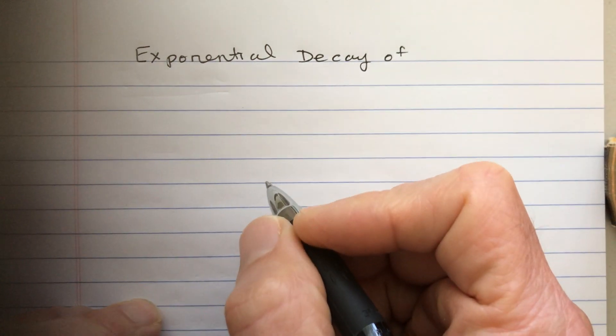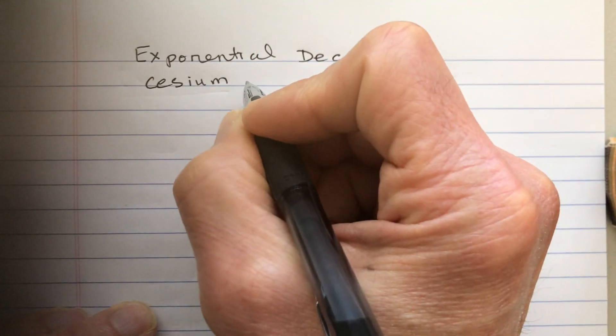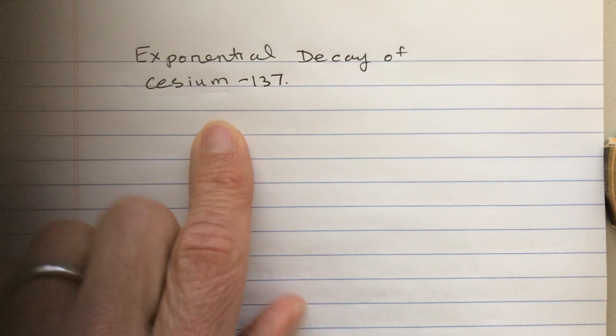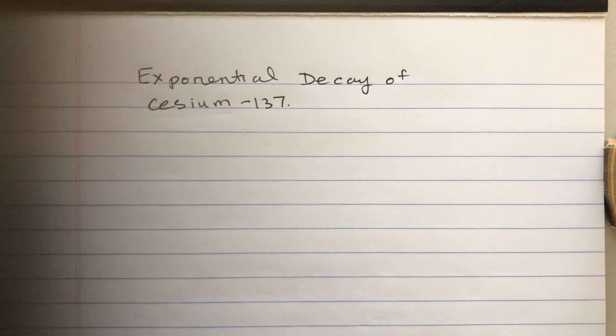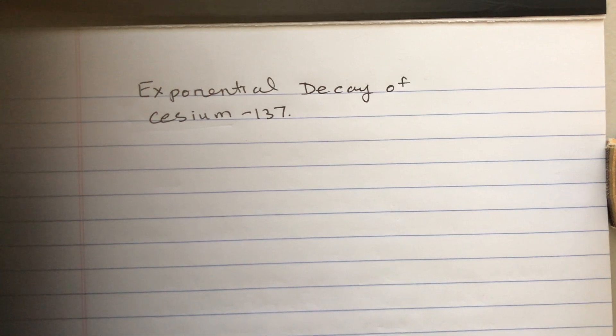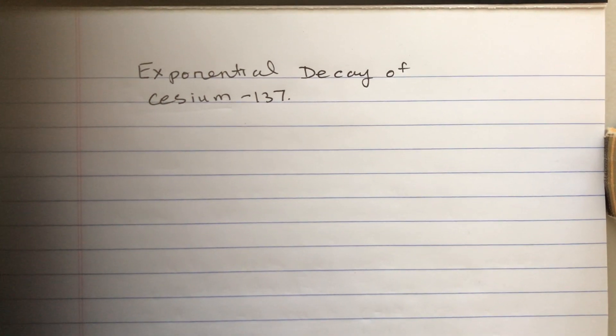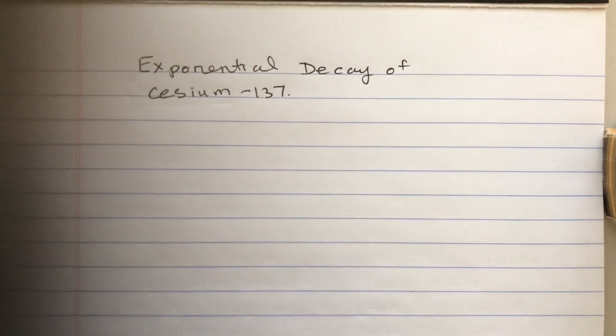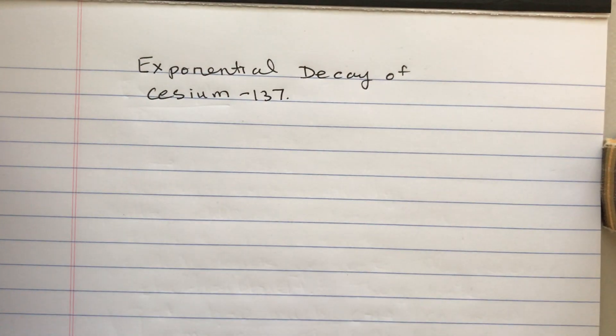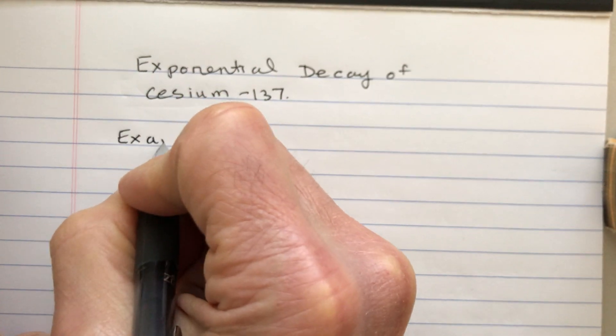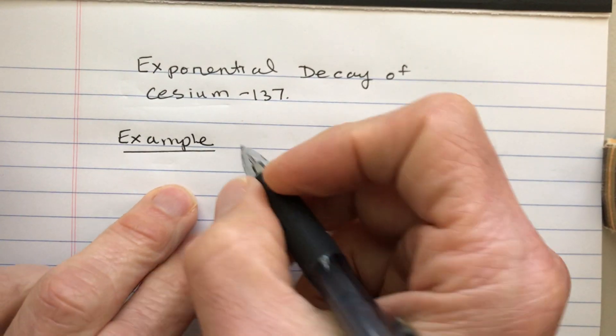Okay, so we're going to look at exponential decay of cesium-137. Cesium-137 is an isotope of cesium that decays from cesium-137 into something else and emits radiation when it does that. For our example...